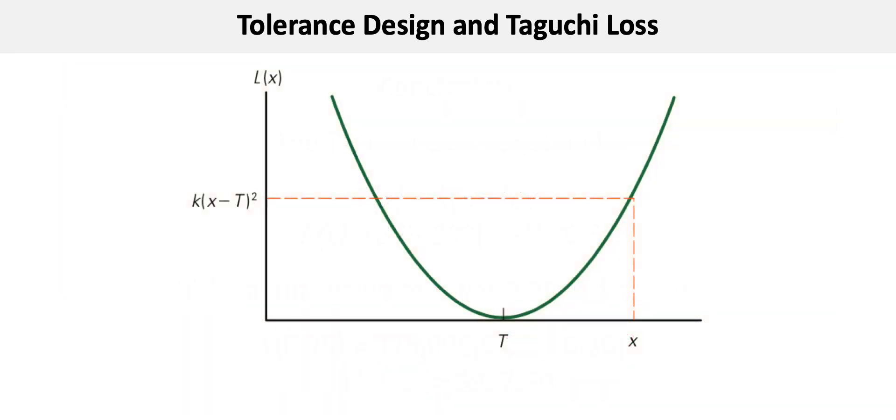Let's see what this looks like visually. You can see at the target spec of T at 0.20 inches, the loss is zero. At x equals 0.22, where the output is 0.02 inches more than spec, the repair costs are $150.